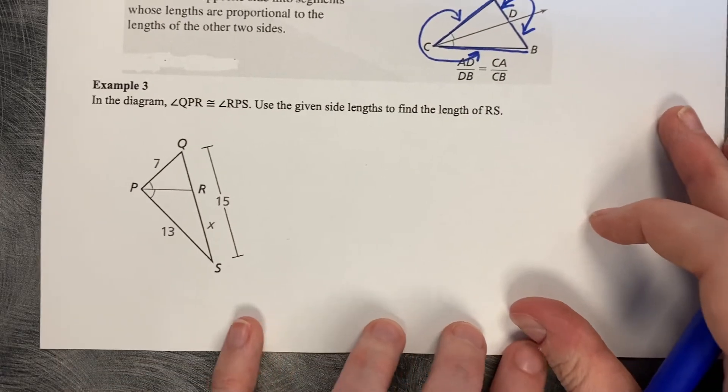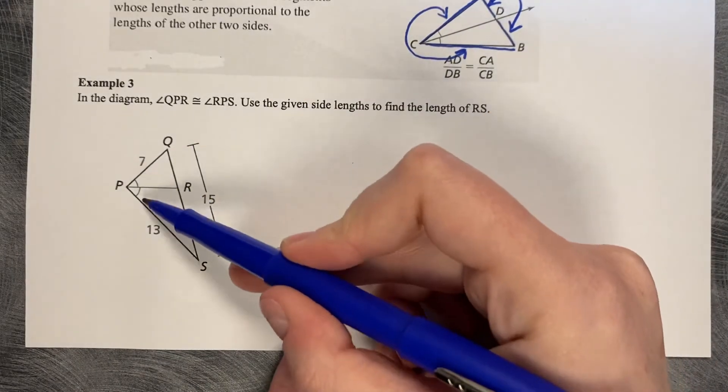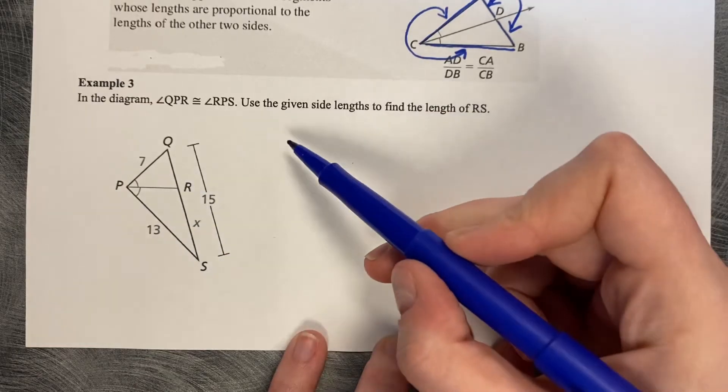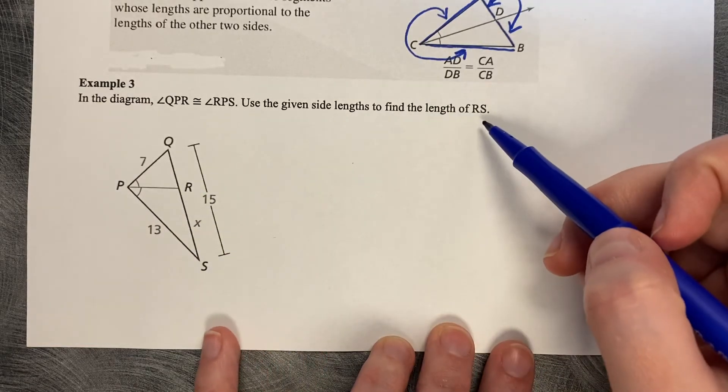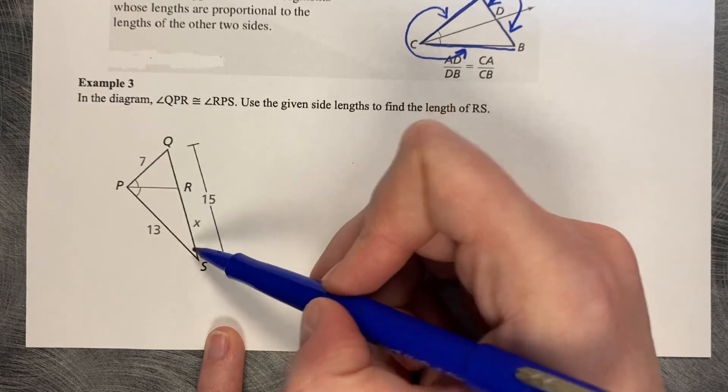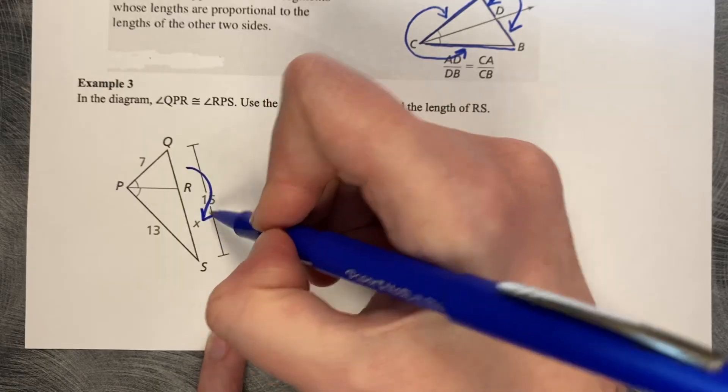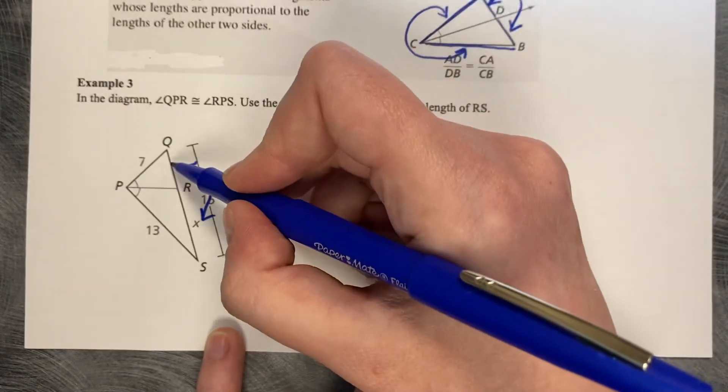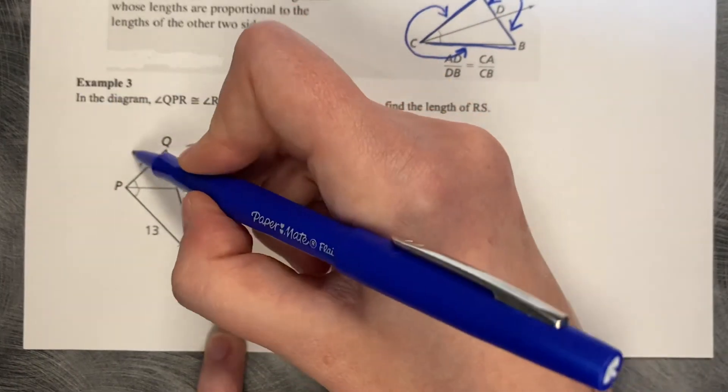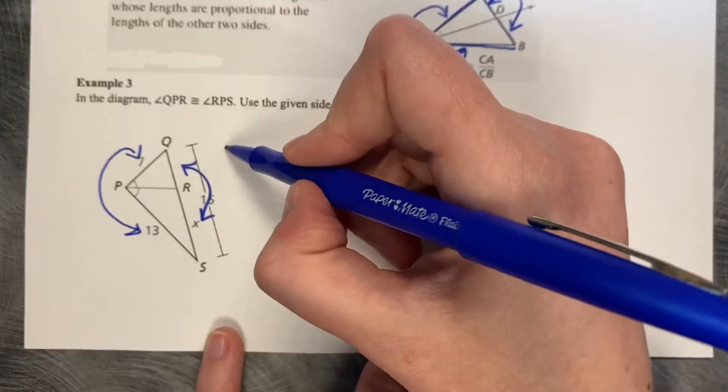Let's try an example. In the diagram, angle QPR is congruent to angle RPS, so that means it's a bisector. Use the given side lengths to find the length of RS. So we're looking for the length of RS here. If we follow this pattern, QR is proportionate to RS. I don't know what QR is. And 7 is proportionate to 13.